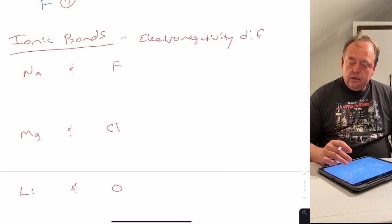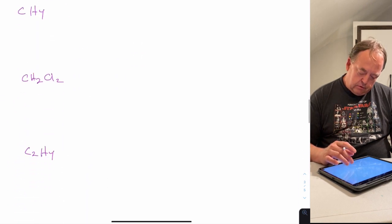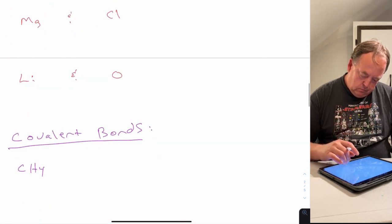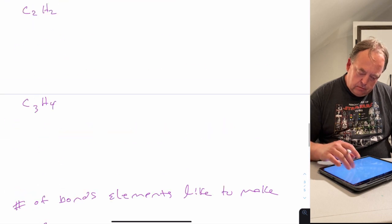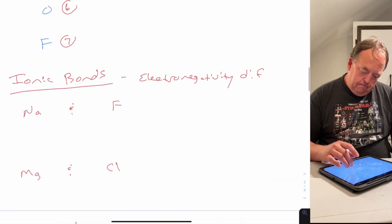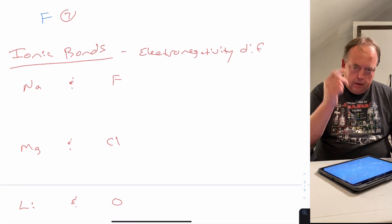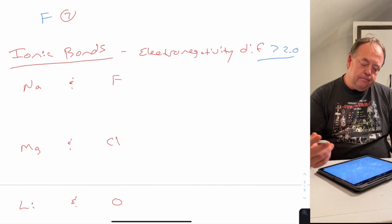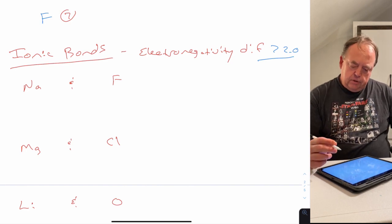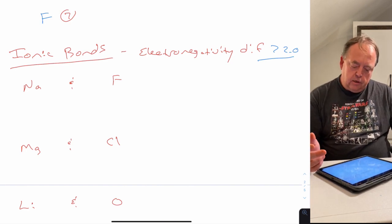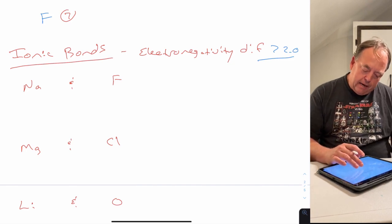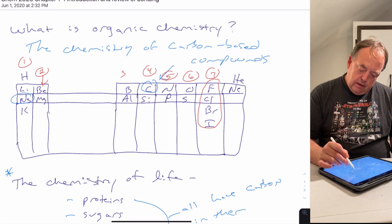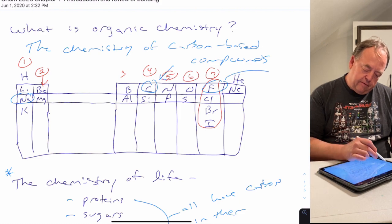Now let's review ionic bonds. If two elements in a bond have an electronegativity difference greater than 2.0, they typically form ionic bonds. For example, sodium has one valence electron and fluorine has seven valence electrons.